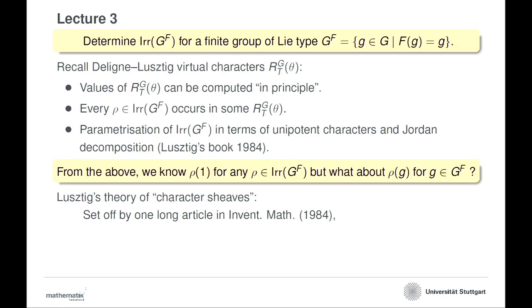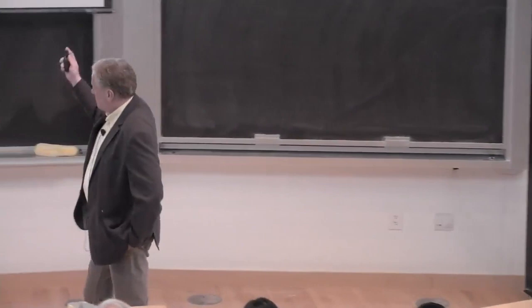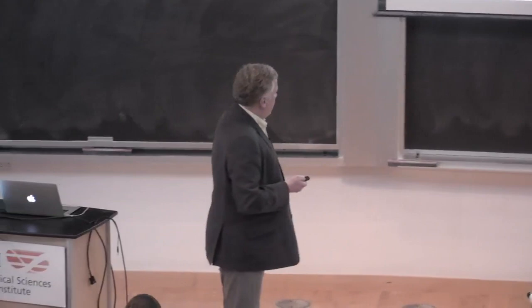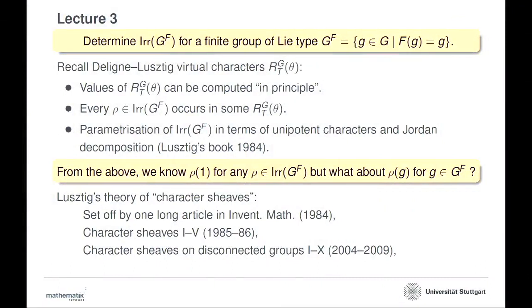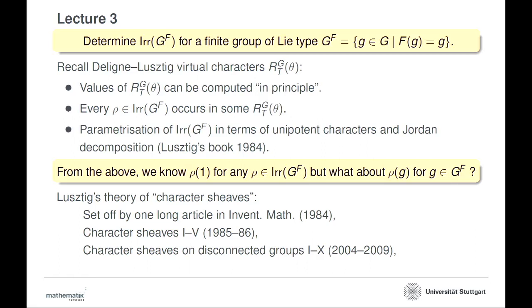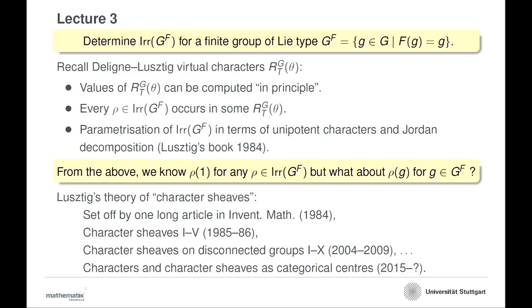This was set off by one long article in Inventiones, more than 70 pages long. Then there is a series of papers, character sheaves one to five, written in two years. Later Lusztig extended this theory also to groups which are not connected, which in the end will also be useful for finite groups because you will want to study automorphism groups and such things — disconnected groups one to ten, ten parts, each article some 30-40 pages long.